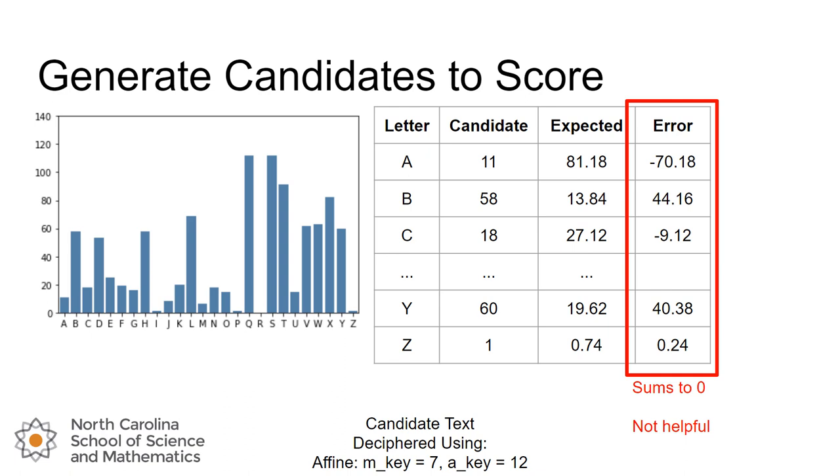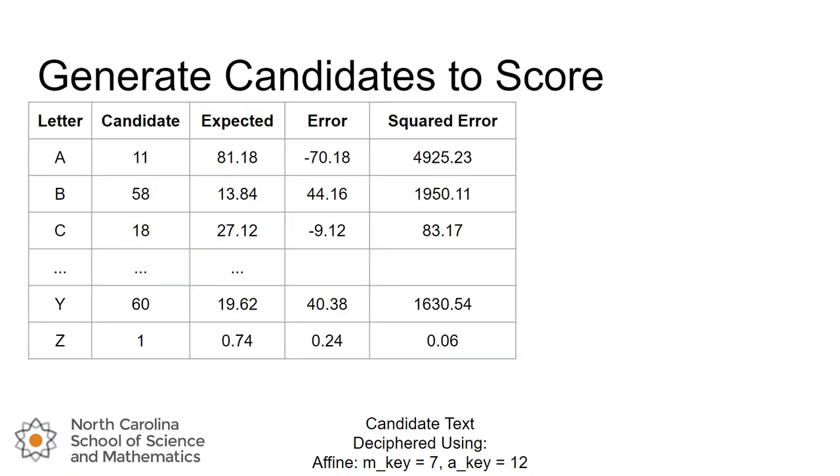So in mathematics, we have a few operations that we like to use to make things all positive, because that's the reason why these are summing to zero. You've got some positive and some negative. Let's just find a way to make them all positive. And a popular way that statisticians like to do that is to square the error. So we're going to move the bar chart out of the way here to give us some more room. So we're going to go down this squared error column. And the way we generate those values is by just taking the error in the column to the left and just squaring it. So we can see that for A, we have a squared error of 4,925.23. For letter B, we have a squared error of 1,950. For C, 83, and so on.